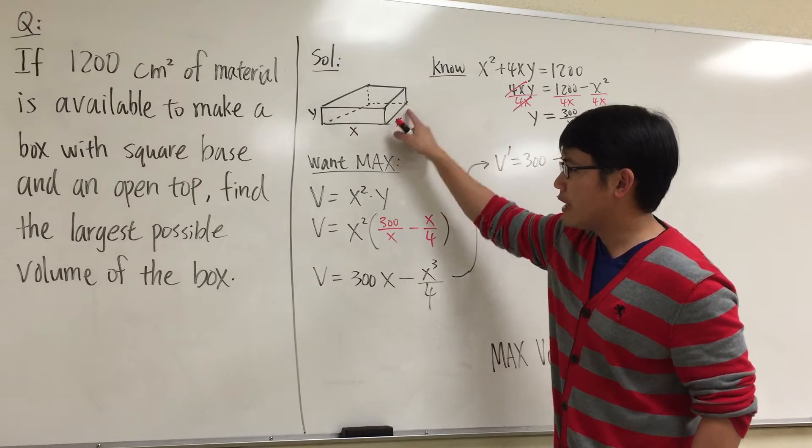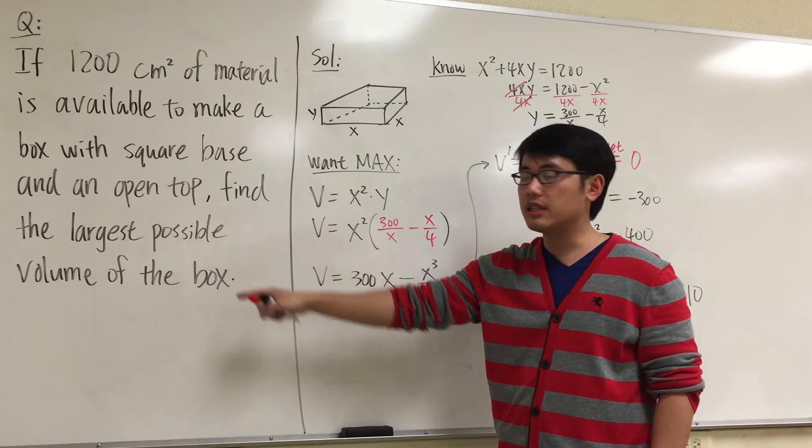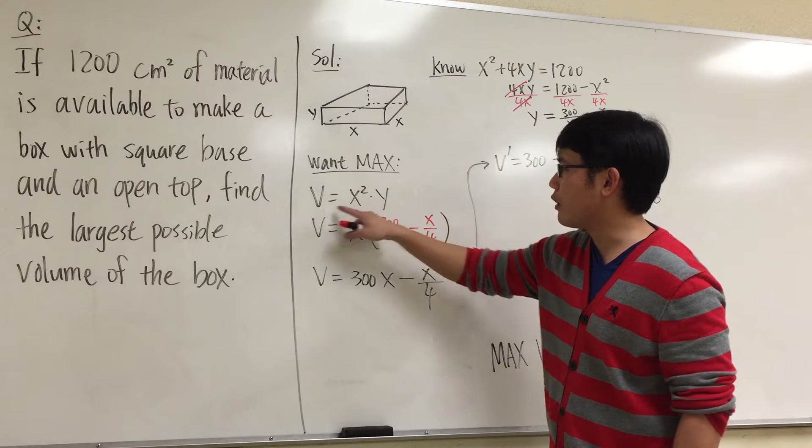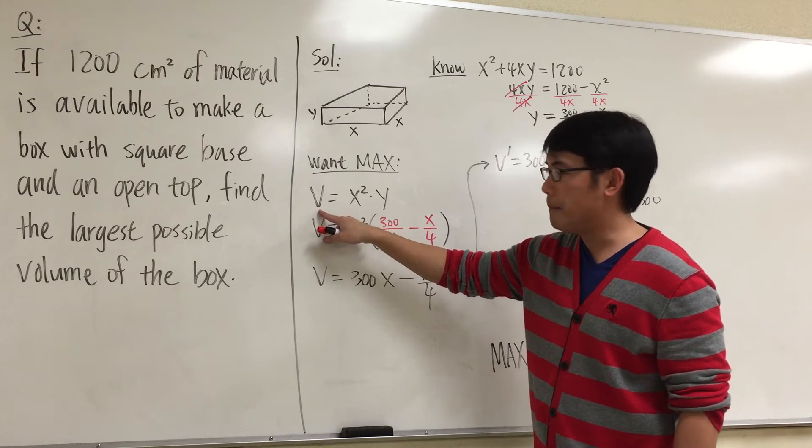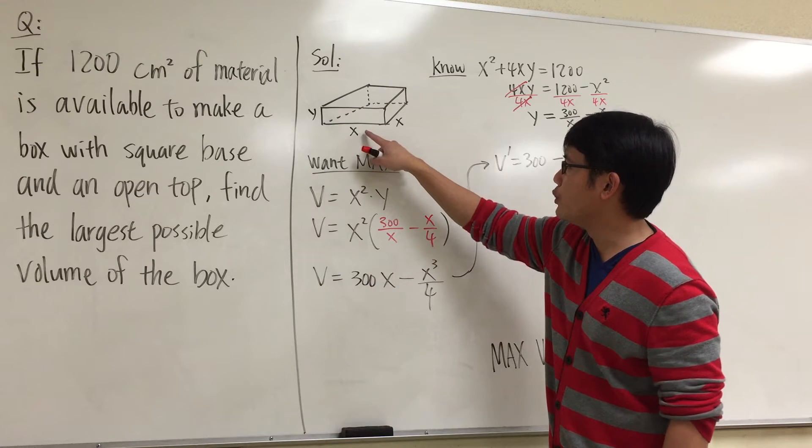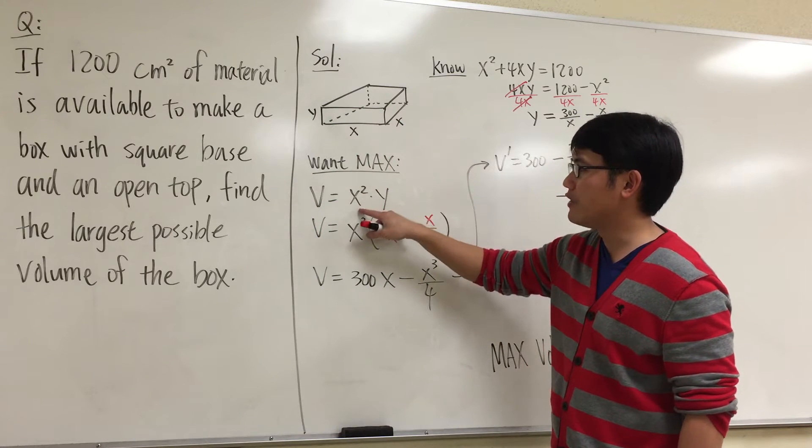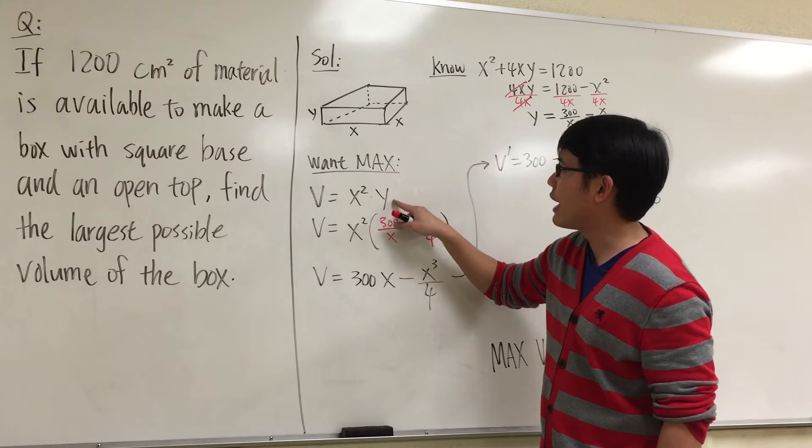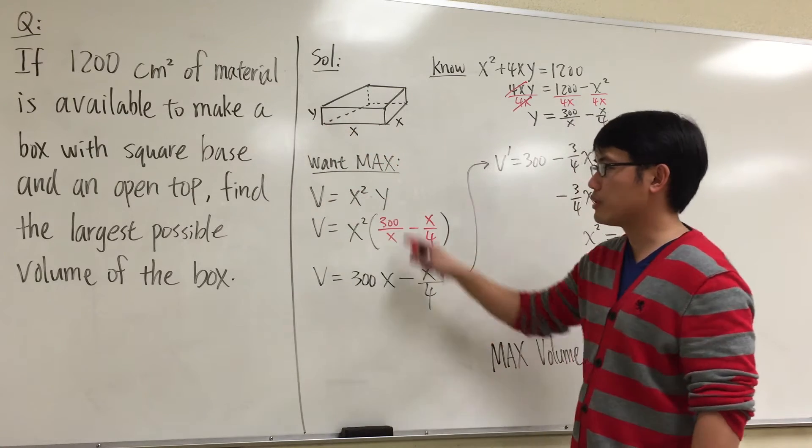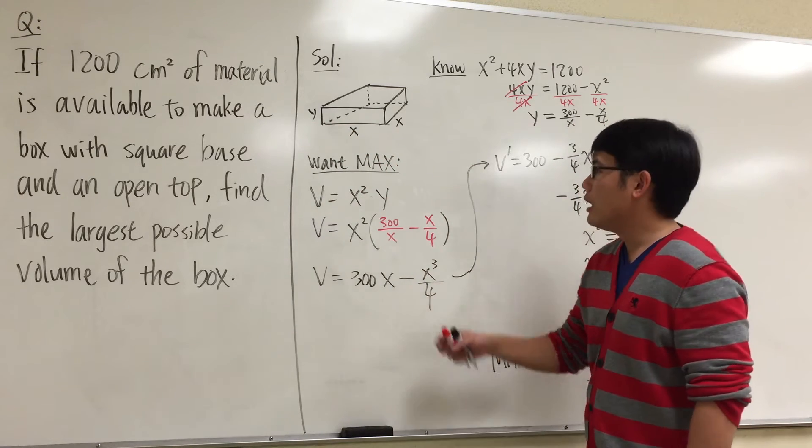We are trying to get the biggest box that we can get. So we want to get the maximum of volume. And based on the picture that we have, what we need to do is x times x. That will give us x² times y. And that will be the following equation for the box.